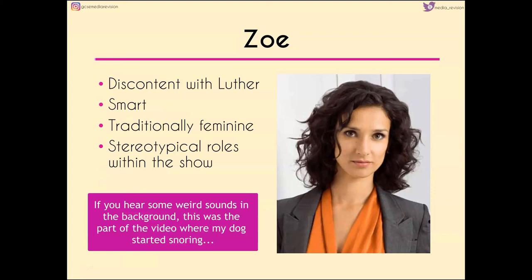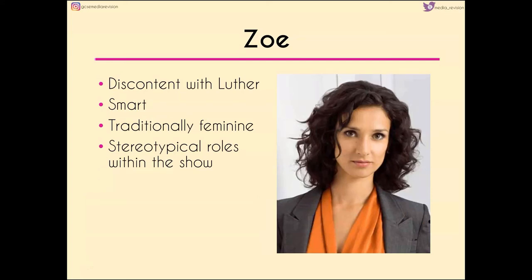Zoe is traditionally feminine, and you can see the contrast between her traditional feminine representation and Teller's non-traditional one just through their appearance. She is discontented with her life with Luther — not happy — and there's an element of feminism in that she is emotionally and intellectually smart enough to know she needs to get out of that situation and face it. She also has a very high-profile job, which a modern audience would expect, though her job could be argued as more geared toward helping others — a more traditionally feminine trait.